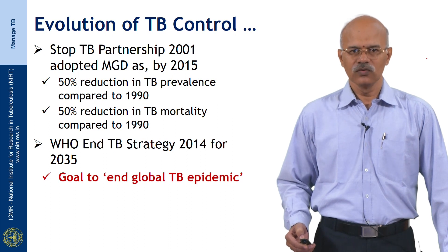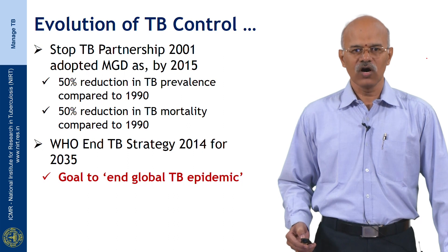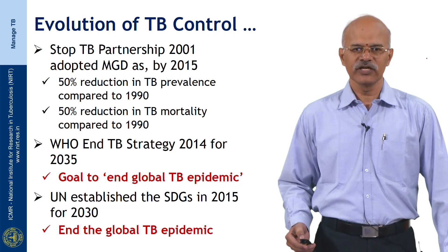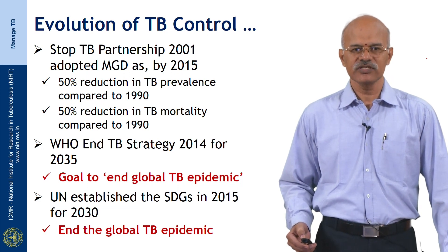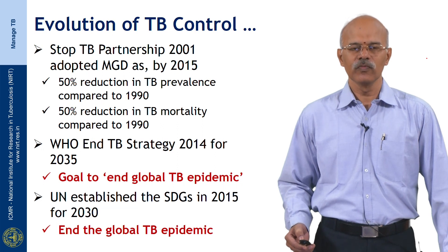The WHO End TB Strategy in 2014 set the goal of achieving the end of the global TB epidemic by 2035. Subsequently, the United Nations also established the Sustainable Development Goals in 2015 for 2030 to end the global TB epidemic.